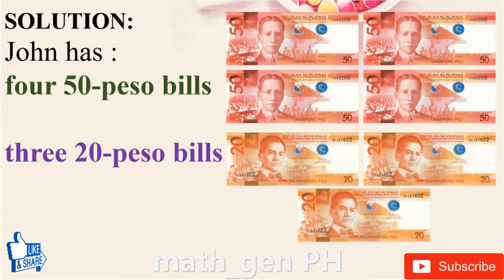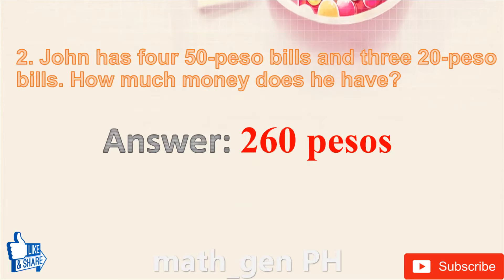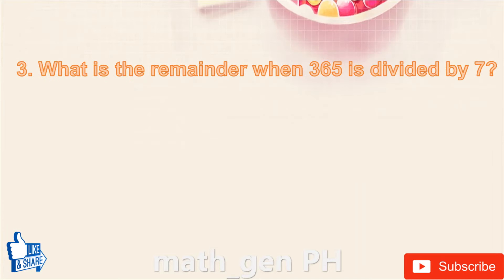Solution: 4 fifty-peso bills = 4 × 50 = 200 pesos. 3 twenty-peso bills = 3 × 20 = 60 pesos. 200 + 60 = 260 pesos. Answer: 260 pesos.